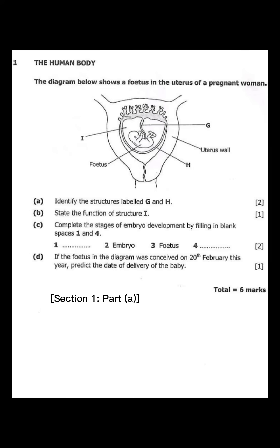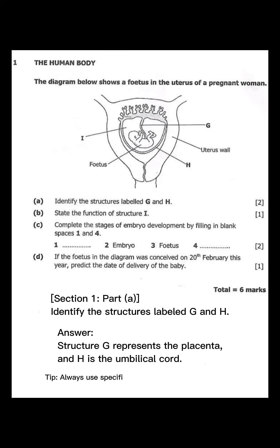Section 1, Part A. Identify the structures labeled G and H. Step 1, study the diagram carefully. Structure G represents the placenta and H is the umbilical cord. The placenta connects the mother and fetus, allowing the transfer of oxygen and nutrients, while the umbilical cord acts as a bridge for this transfer. So, remember to use the correct biological terms and relate them to the functions.